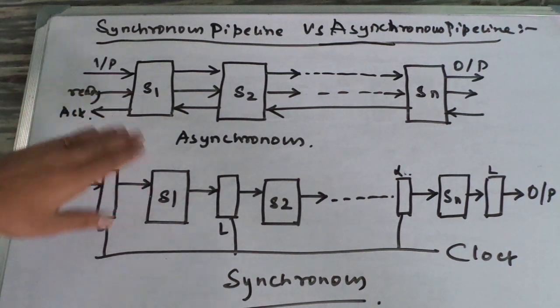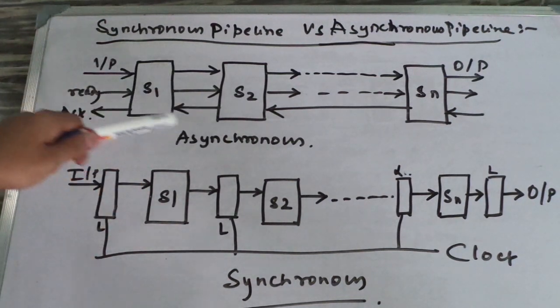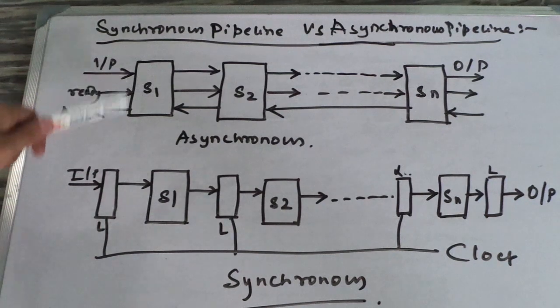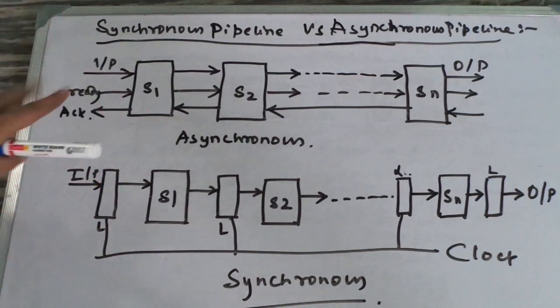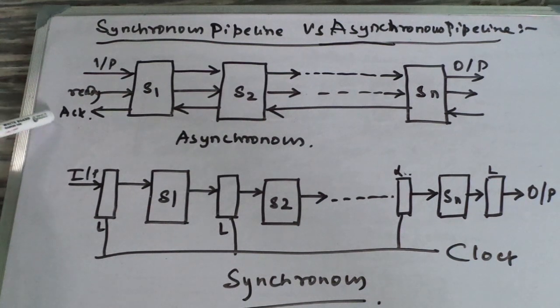But in an asynchronous pipeline, there is no clock or any latch used. Instead of that, we use two things: the ready and the acknowledgement line.